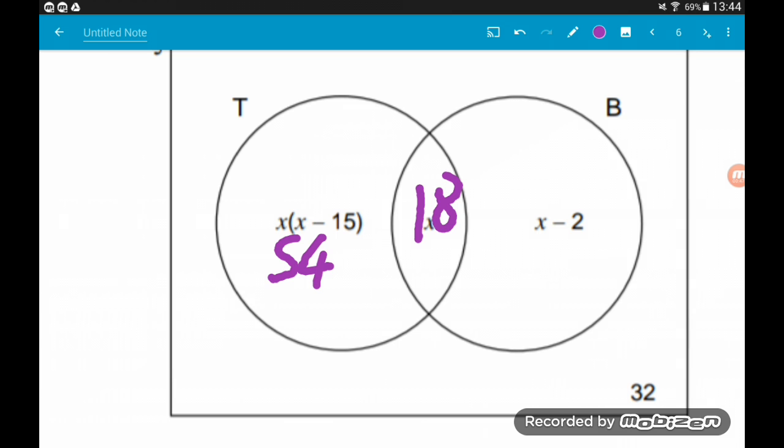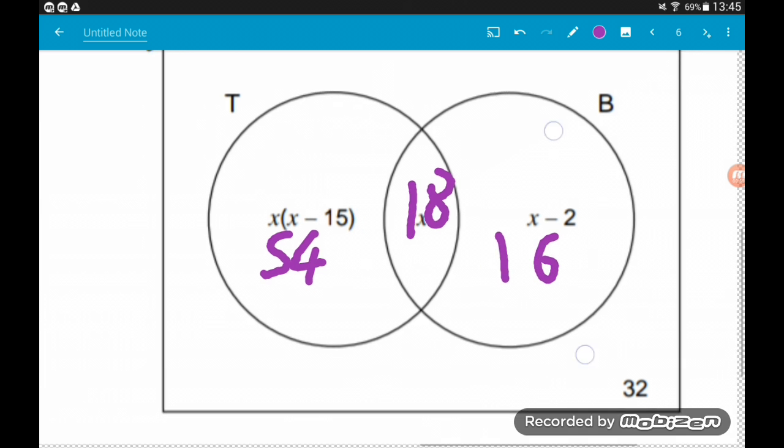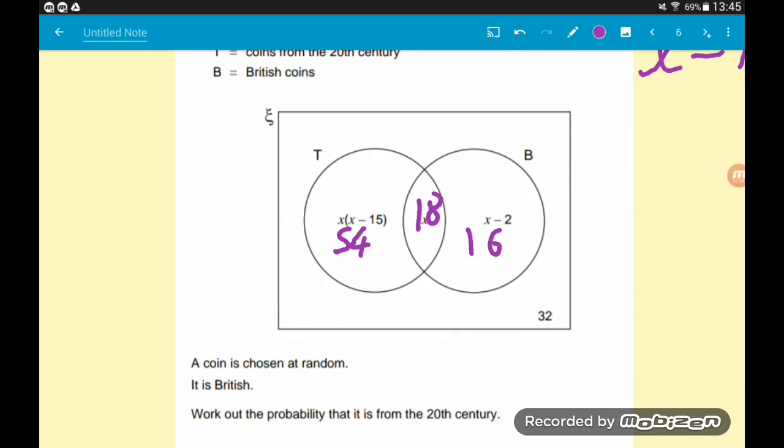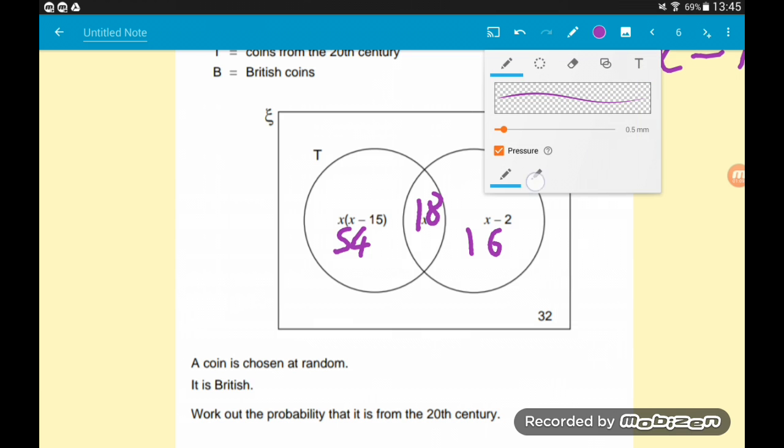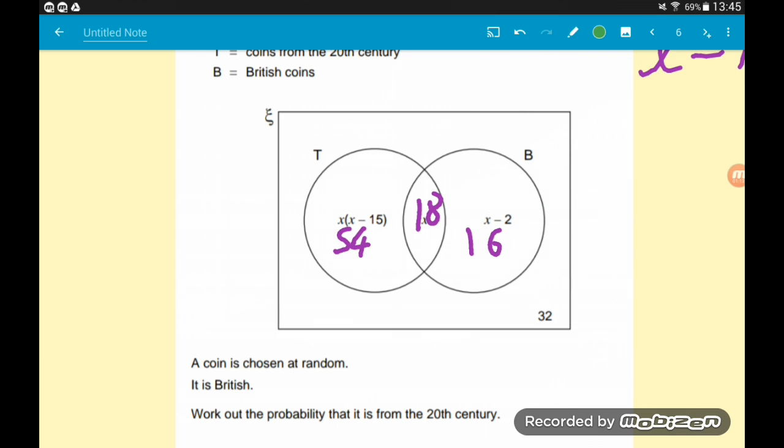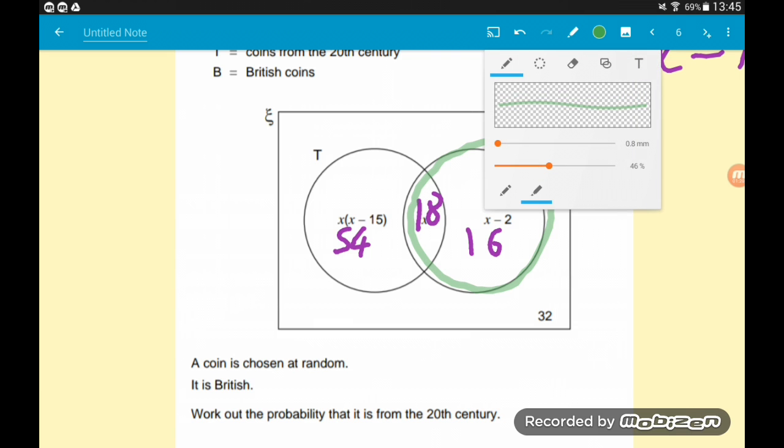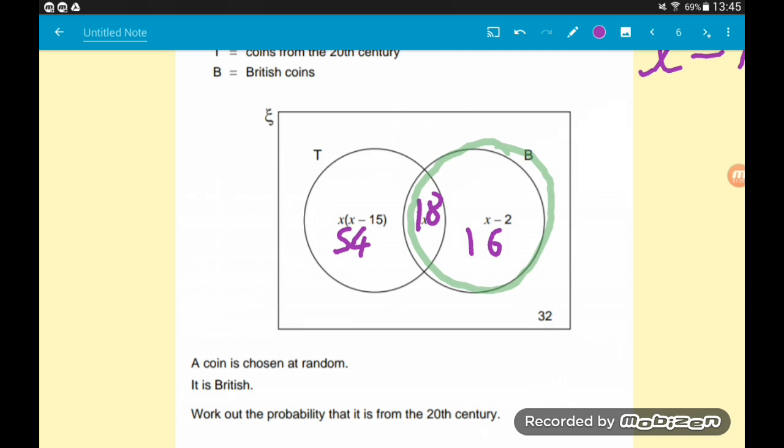Now we know the numbers of each type of coin, we can finally answer the question. We're told a coin is picked at random, it is British. So that's important - we are being told a coin is British, so we're only worried about things inside of this circle. We want to work out the probability that it is also 20th century.